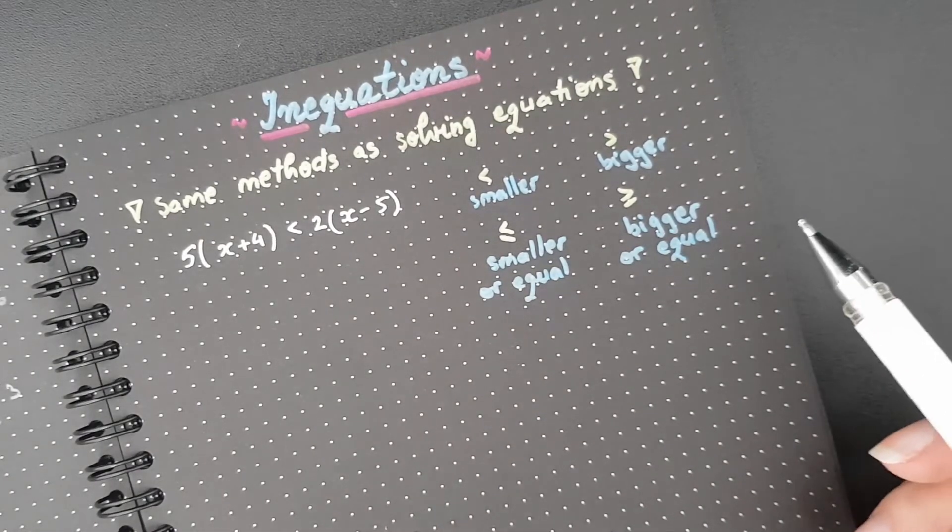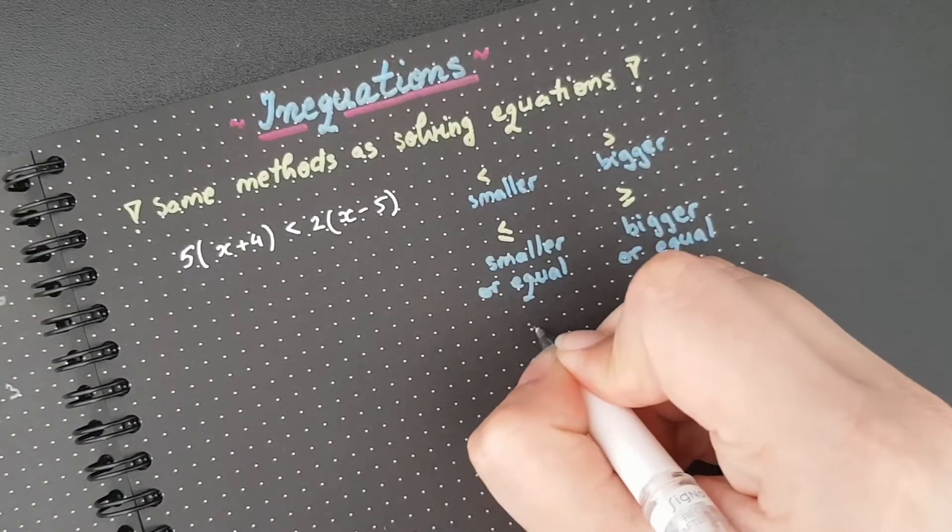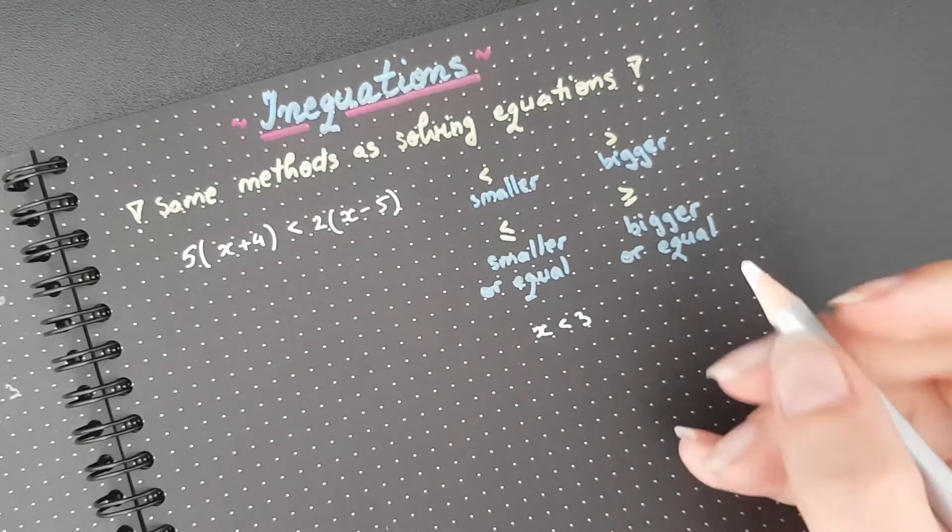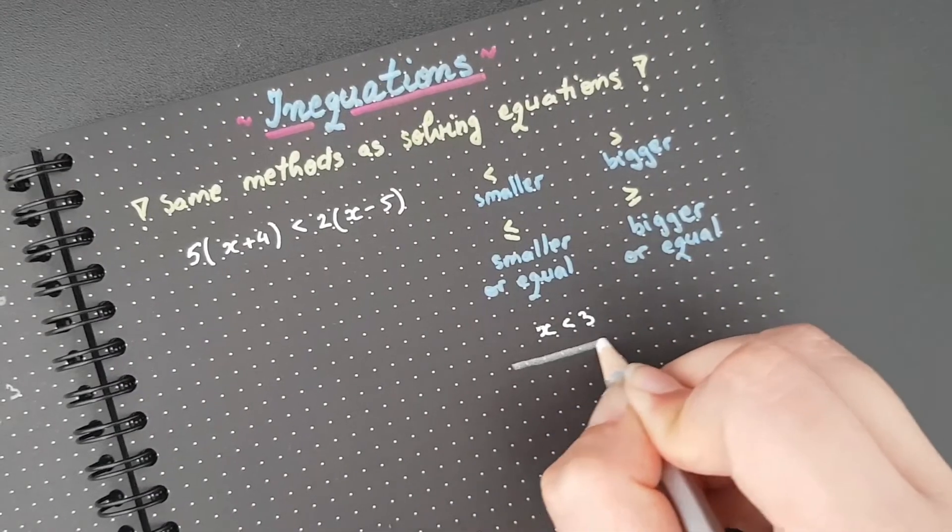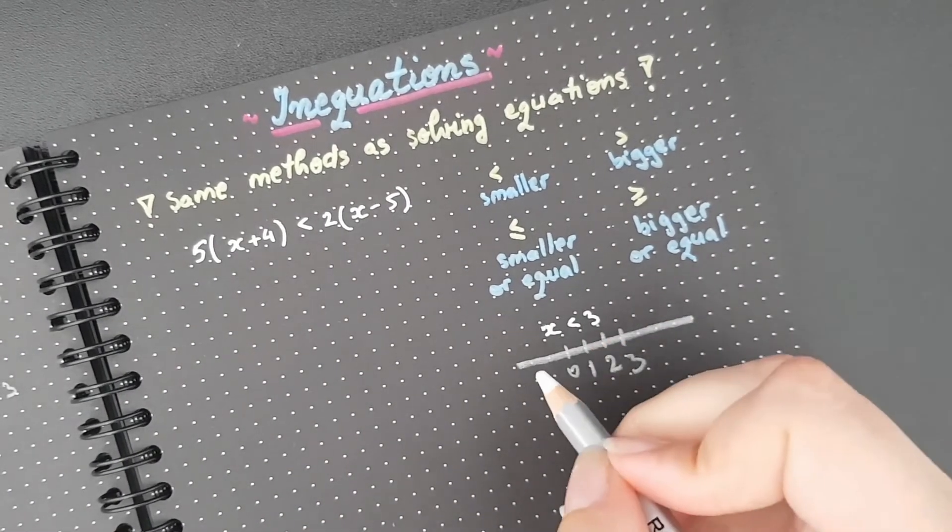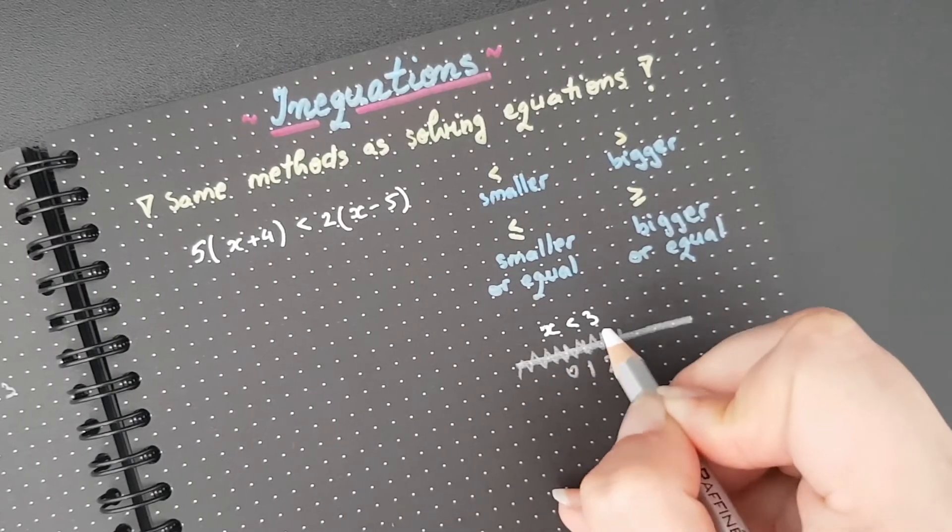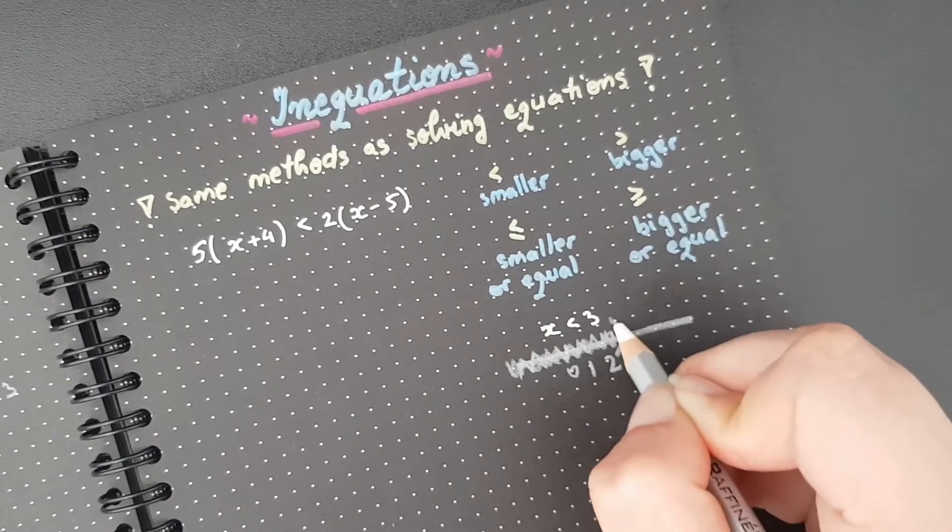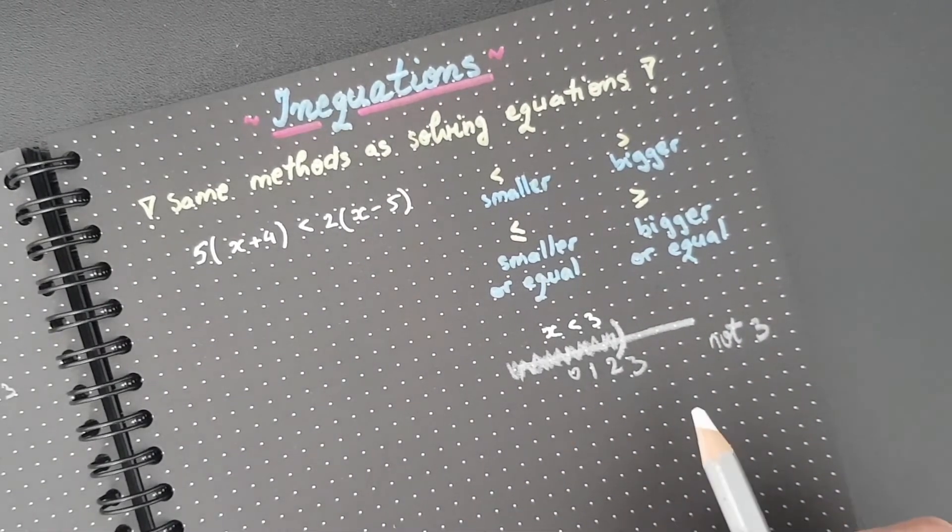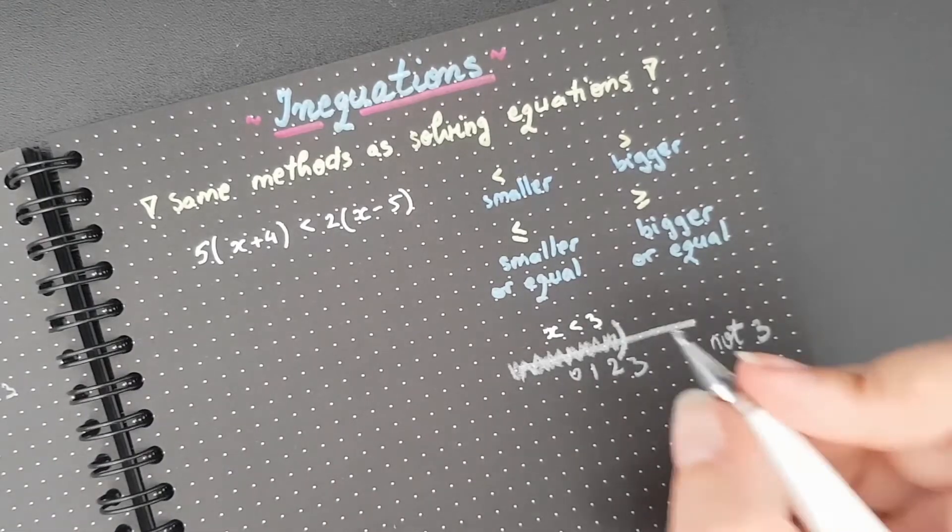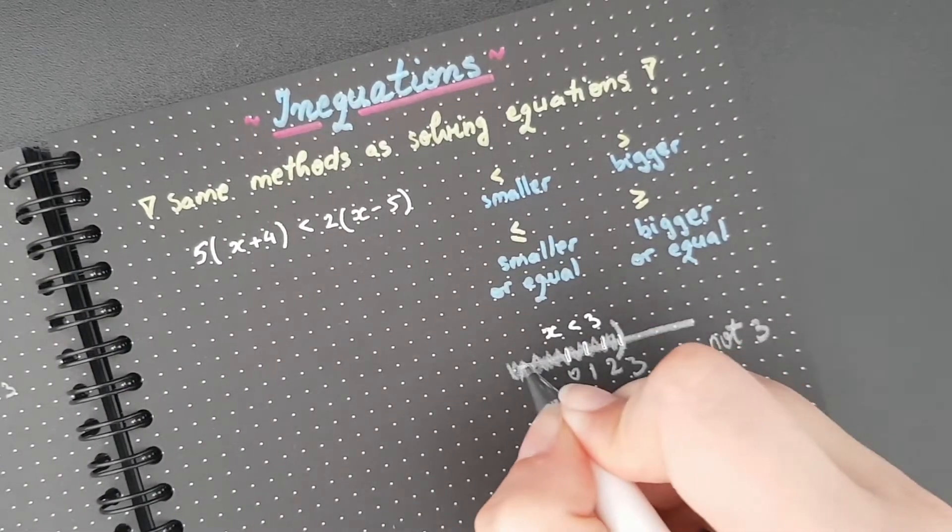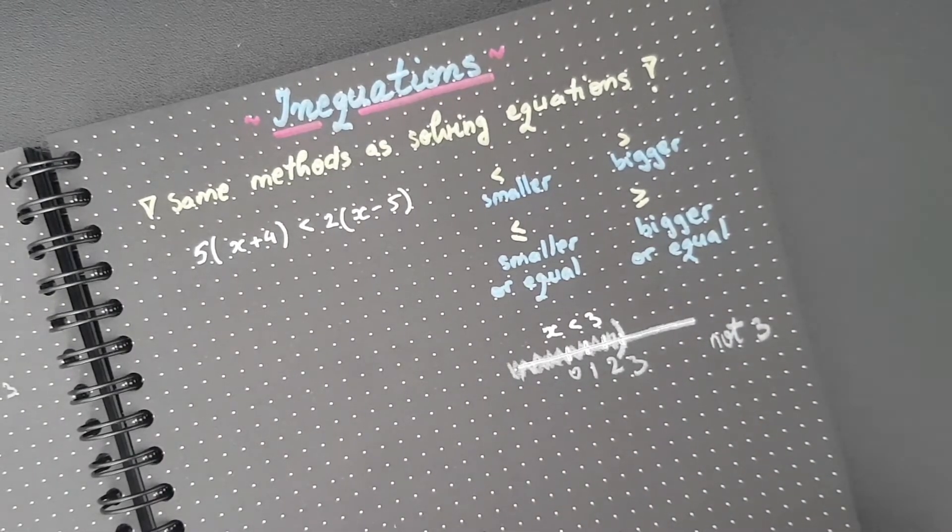I should mention this because I think it's quite important. So for example, if you have x smaller than 3 on the number line, I'm gonna make a little number line over here. And let's say I start with 0 here, 1 here, 2 here, 3 here. I actually mean absolutely every single number that's smaller than 3, anything that is smaller than 3, but not 3. So I normally put it like that. So I don't take 3 for x, x can be absolutely anything that's smaller than 3 to be fair.